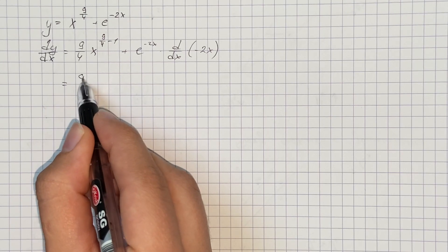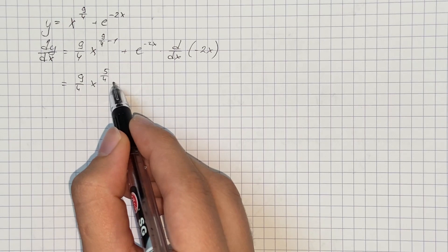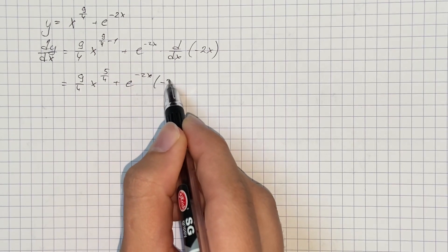And therefore we get 9 over 4 times x to the power of 5 over 4 plus e to the power of negative 2x times negative 2.